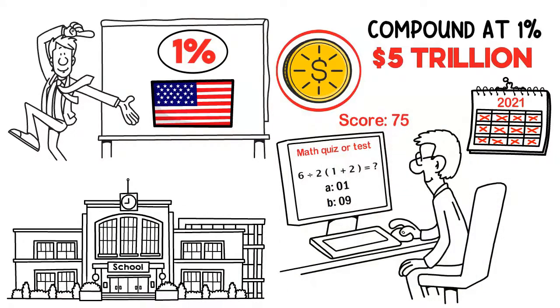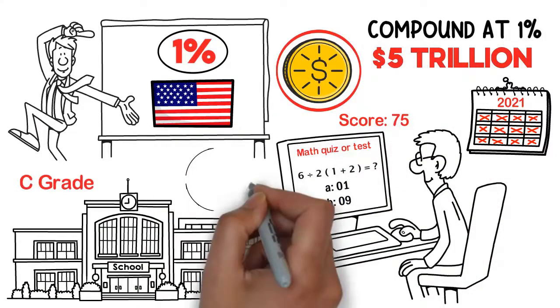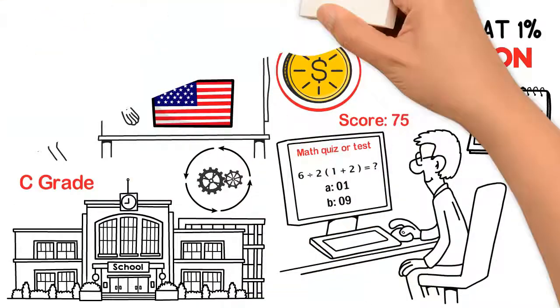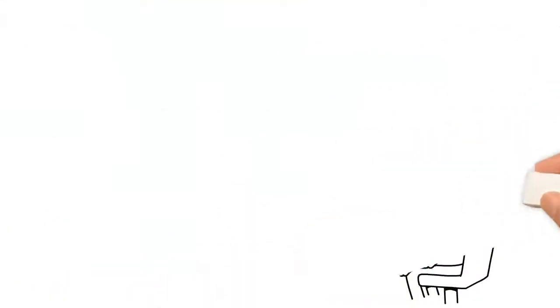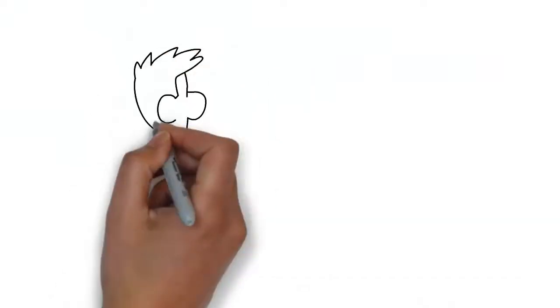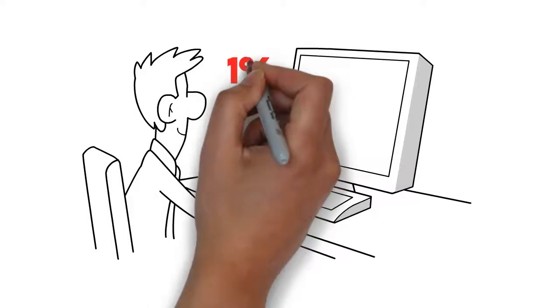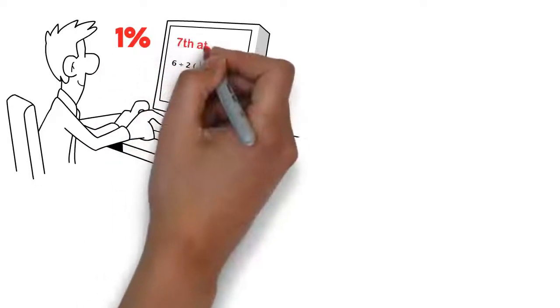Now, we know that repetition is the mother of all learning, so let's take the same practice test or quiz again. But each time we retake the quiz or test, let's assume we get 1% better on our score. By the seventh attempt, we'd improve enough to get a B grade at just over 80%.